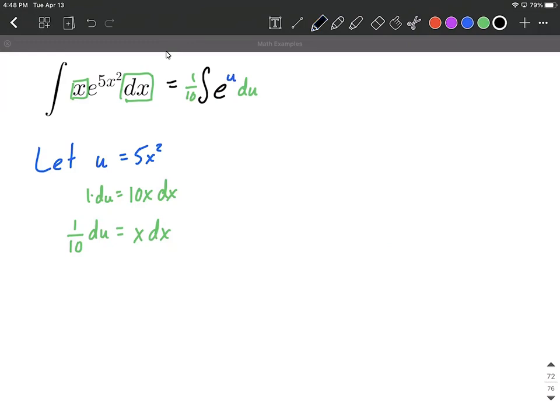Now all we have to do is integrate this. To do so, it's one-tenth. That's going to come along as our constant. And when we integrate e to the u power, we simply get e to the u back. But we also want to put a plus c at the end because this is an indefinite integral.